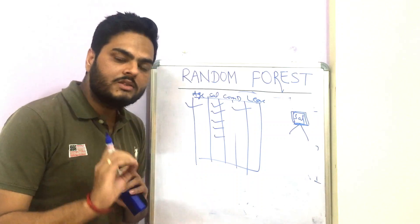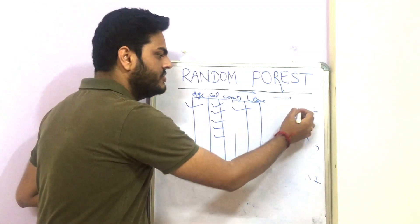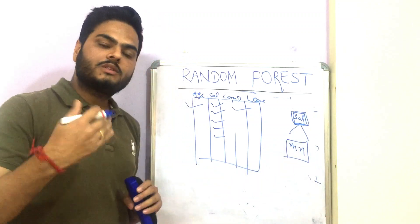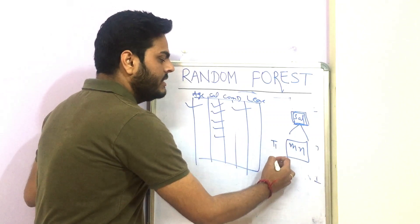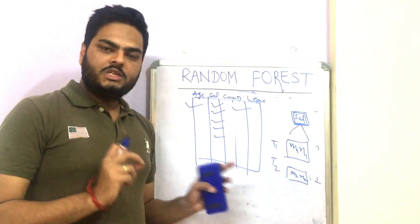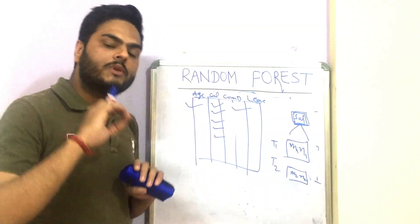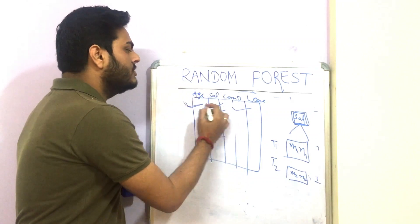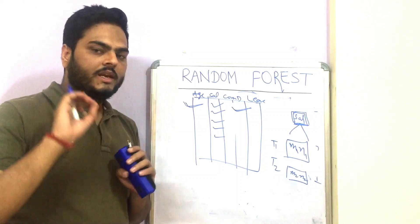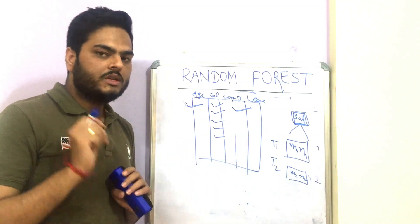But when you create multiple trees, each tree takes a random subset of columns. There is a high possibility that in one of these trees, salary is not part of the features, so training happens on other variables like age or commute distance. Any pattern in those columns gets captured, and that tree also votes in the final decision. Hence, random forest captures patterns in the data from various angles, which is why it tends to give good results.